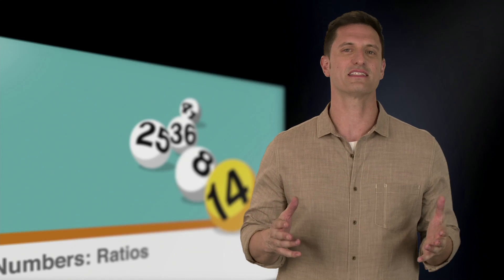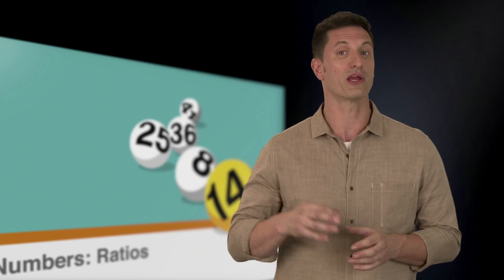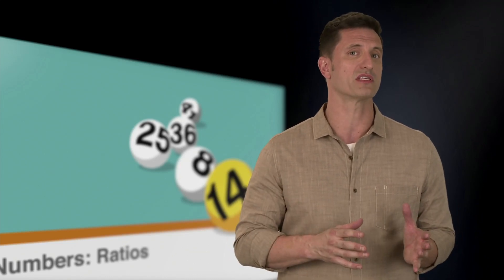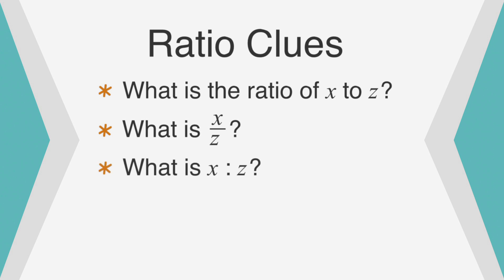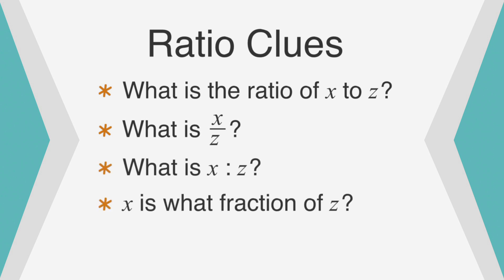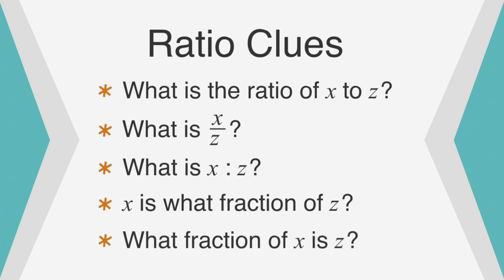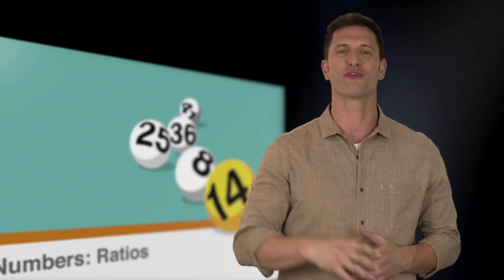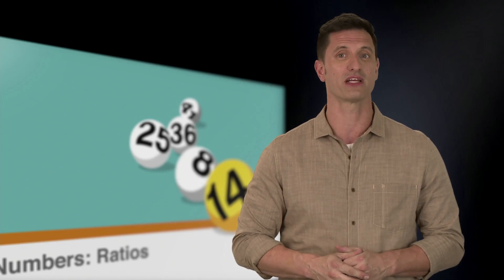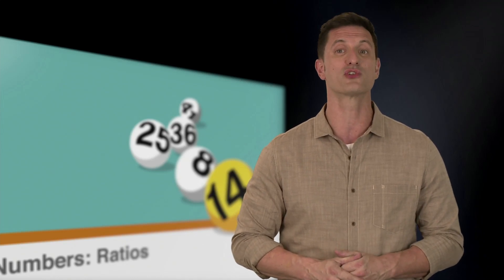On the SAT, you'll know that you're looking for a ratio and can pick numbers if you see any of the following: 'What is the ratio of x to z?', 'What is x divided by z?', 'What is x to z?', 'X is what fraction of z?', and 'What fraction of x is z?' If you need to go over those again, feel free to rewind. It might even help to write those down to get super familiar.